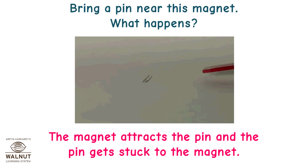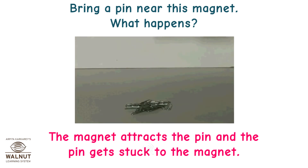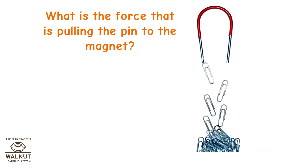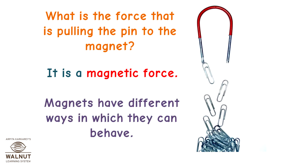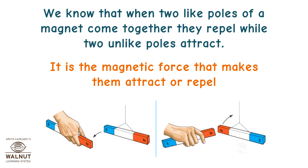Bring a pin near this magnet. What happens? The magnet attracts the pin and the pin gets stuck to the magnet. What is the force that is pulling the pin to the magnet? It is a magnetic force. Magnets have different ways in which they can behave. When two like poles of a magnet come together, they repel, while two unlike poles attract. It is the magnetic force that makes them attract or repel.